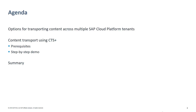The agenda looks as follows. First, we will explain the various options that are currently supported for transporting integration content across tenants. For the rest of the session, we will focus on the CTS Plus option, because here you have full governance when transporting objects. We will first go through the prerequisites to enable CTS Plus transport in your landscape, and then show how to run the actual transport between two tenants.